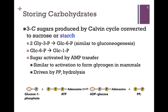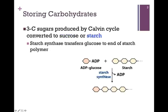However, when we hydrolyze that last phosphoanhydride bond of inorganic pyrophosphate, we release more energy, and that makes the process overall irreversible. Now that we have our substrate ADP glucose, starch synthase enzyme transfers that glucose to the end of the starch polymer in a process very similar to glycogen synthase, and we release ADP in the process.